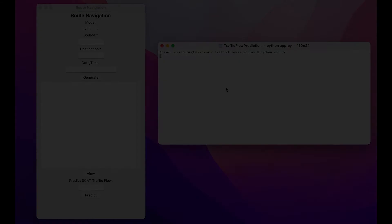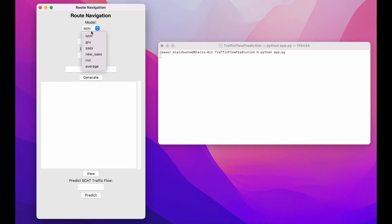So for the application, you've got the option to select the different model types, as well as enter a source SCATS site, and enter a destination SCATS site. You can also optionally enter a date and time in the following format, and then you can generate the routes.